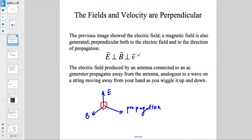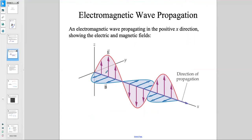The electric field produced by an antenna connected to an AC generator propagates away from the antenna, analogous to a wave on a stream moving away from your hand as you wiggle it. The E field makes a sinusoidal wave, and the B field does the same along the perpendicular direction — at every single point they maintain a 90-degree angle to each other.